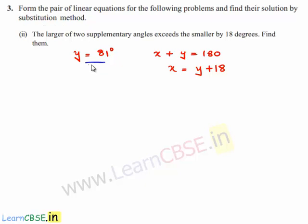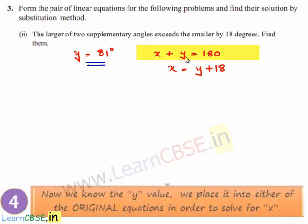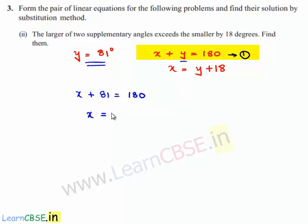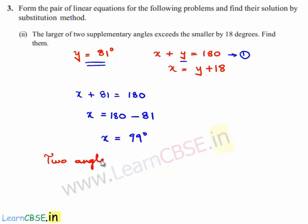Now substitute the value of y, which is 81, in equation number one. So x plus 81 is equal to 180, giving x is equal to 180 minus 81, therefore x is equal to 99 degrees. Therefore the two angles are 99 degrees and 81 degrees.